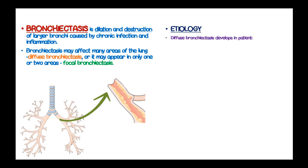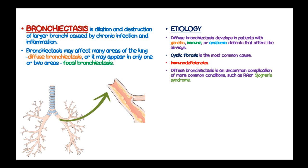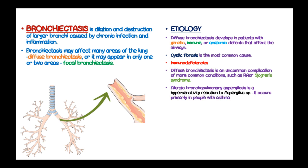Diffuse bronchiectasis develops in patients with genetic, immune, and anatomic defects that affect the airway. Cystic fibrosis is the most common cause of bronchiectasis together with immunodeficiencies. Diffuse bronchiectasis is also an uncommon complication of more common conditions such as Sjogren's syndrome, and allergic bronchopulmonary aspergillosis, which is a hypersensitivity reaction to Aspergillus species that occurs most commonly in people with asthma.